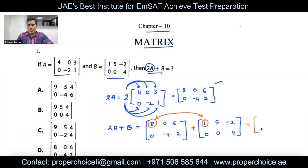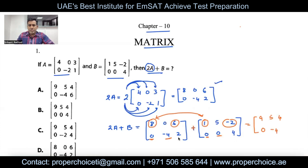8 plus 1 equals 9, then 0 plus 5 is 5, then 6 plus negative 2 is 4. Next row: 0 plus 0 is 0, negative 4 plus 0 is negative 4, and 2 plus 4 is 6. So the resulting matrix is 9, 5, 4, 0, negative 4, 6.